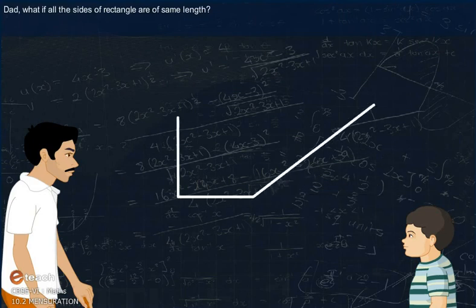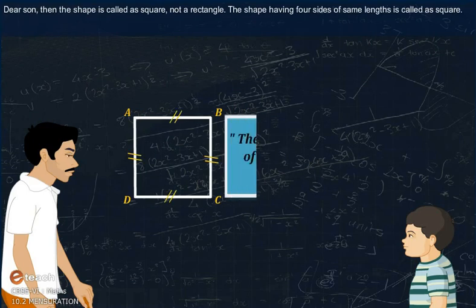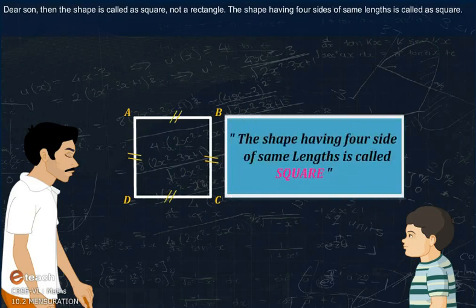Dad, what if all the sides of a rectangle are of the same length? Dear son, then the shape is called a square, not a rectangle. The shape having four sides of the same length is called a square.